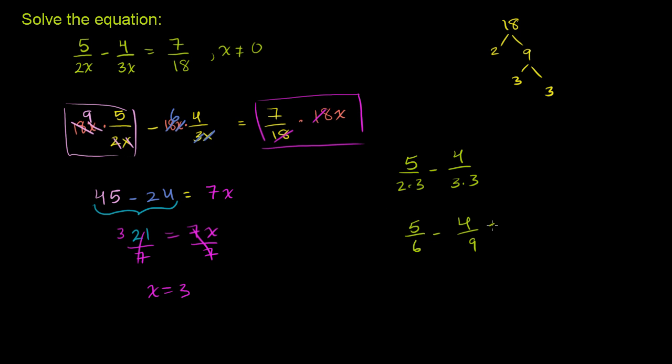We want to find a common denominator. 18 is the least common multiple of 6 and 9. So let's put it over 18. 5 sixths is the same thing as 15 over 18. Multiply the numerator and denominator by 3. 4 ninths is the same thing as 8 over 18. Multiply the numerator and denominator by 2.